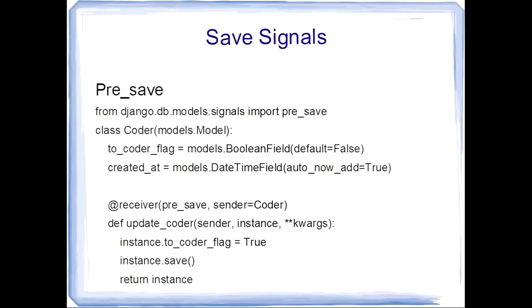Next is save signal. There are two types: pre-save and post-save. In pre-save, the signal is sent before a model instance is saved to the database. This method is called after the instance is created and before it is saved to the database. We will understand through this coding.